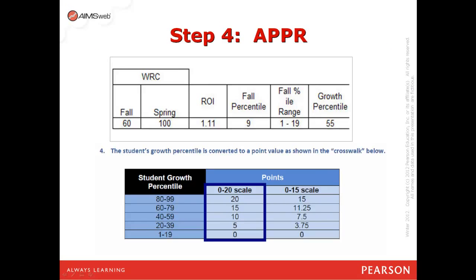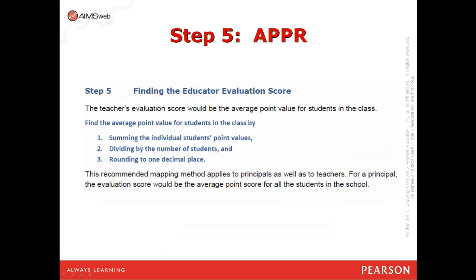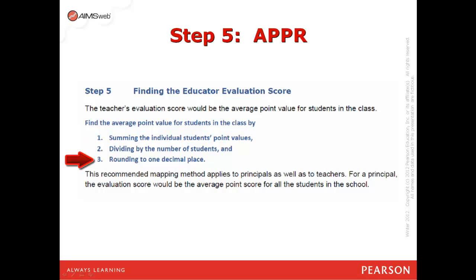We can then map this to the crosswalk available as part of the APPR process in New York. Going to the 40 to 59 range — because John's score was 55 — a teacher would be awarded 10 points for John's performance. To find the educator evaluation score, the teacher's score becomes the average point value for all students in the class: take John's point value of 10, add it to all other students, divide by the number of students, and round to one decimal place. This recommended mapping method applies to principals as well as teachers, with the principal's evaluation score being an average point score for all students in the school.